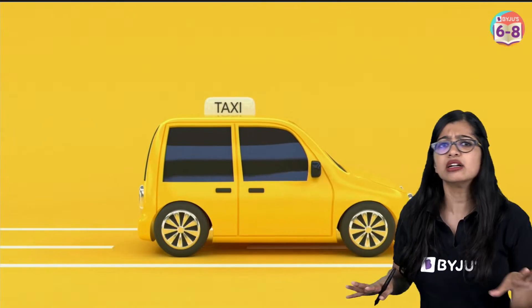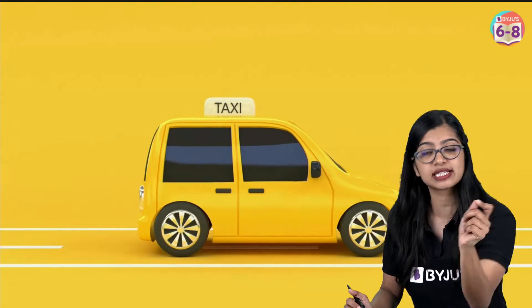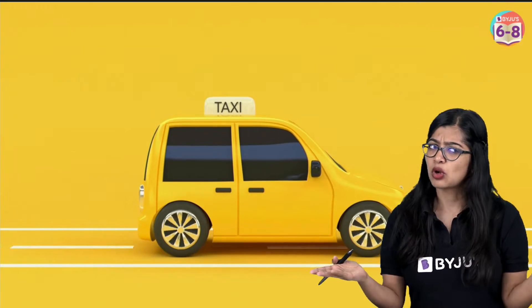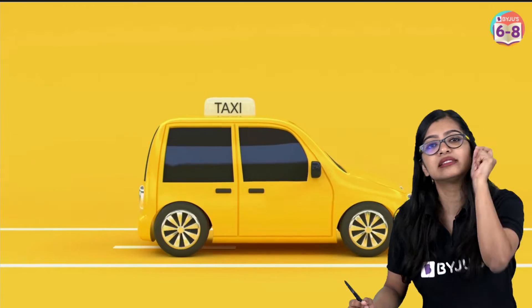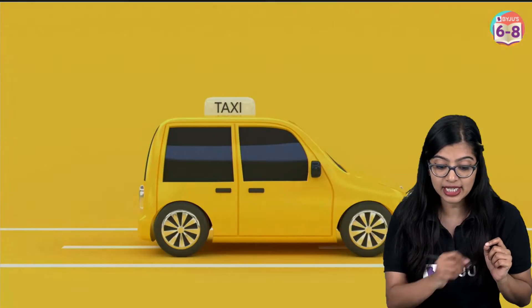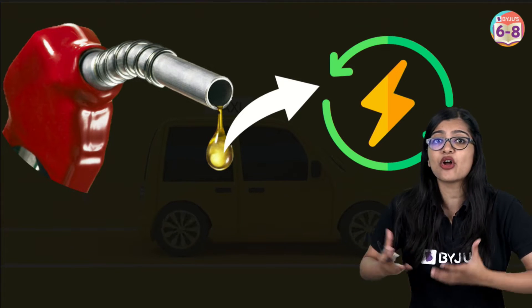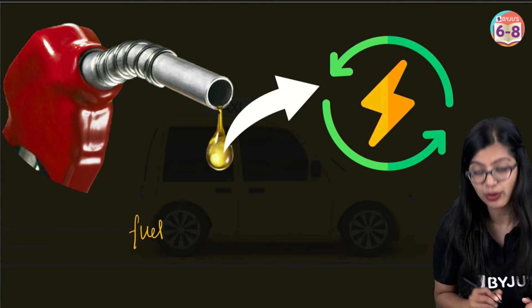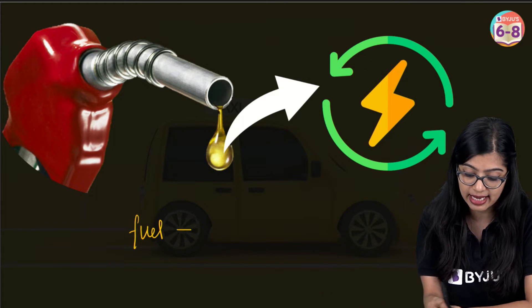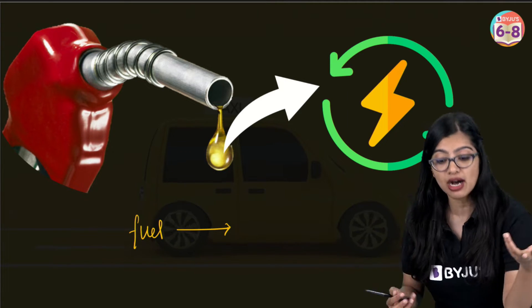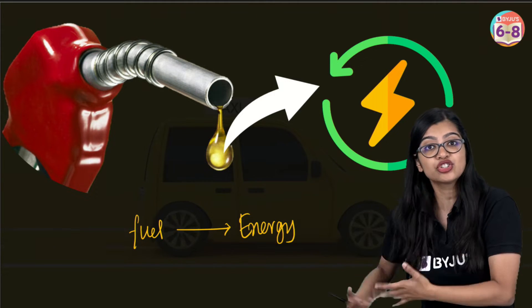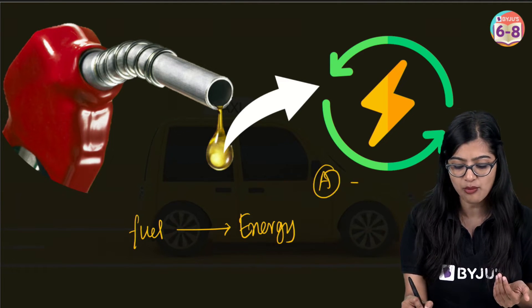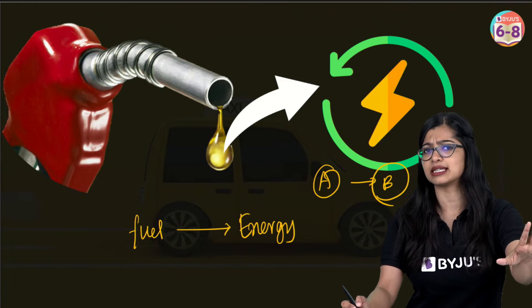For any vehicle to function, what is the most important thing it would need? Is it the wheels, the door, the engine? They're all important, but they still need one thing — they need fuel. Without fuel, they won't be able to move from one place to another. For any vehicle, fuel is put into the fuel tank and it gets burnt in order to release energy. This energy is utilized by the different parts so the car can go from one place to another.